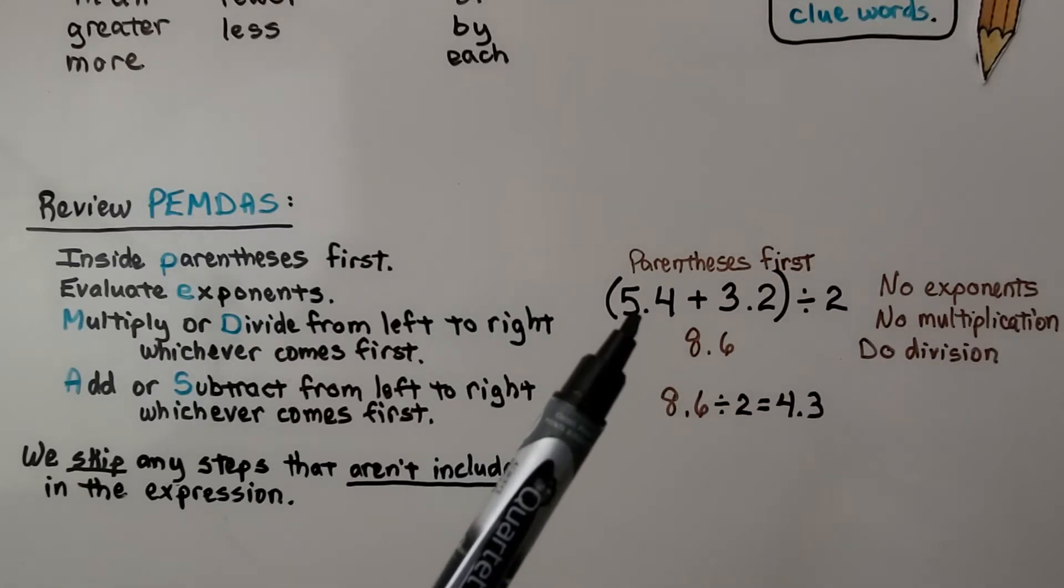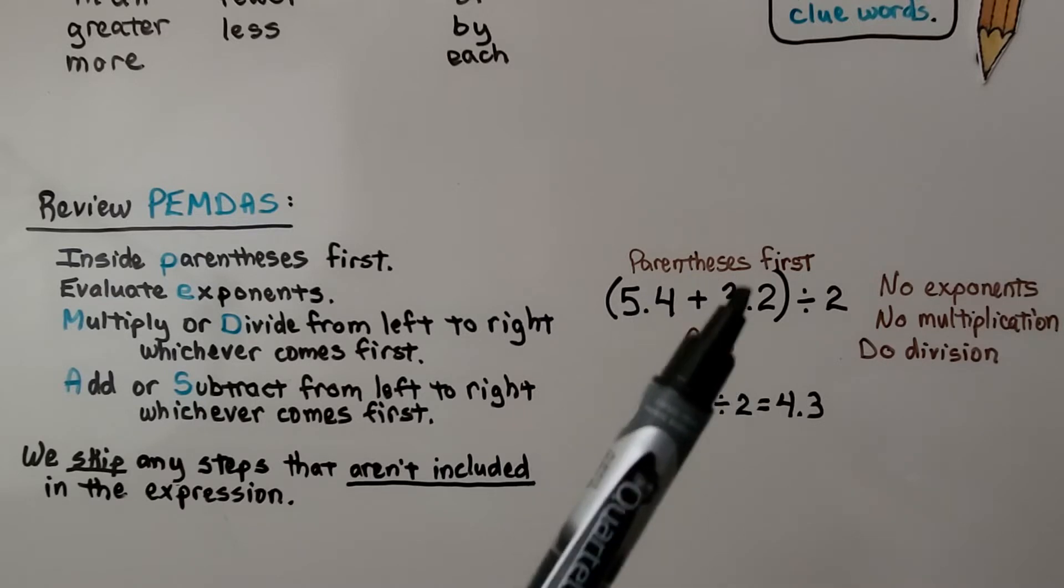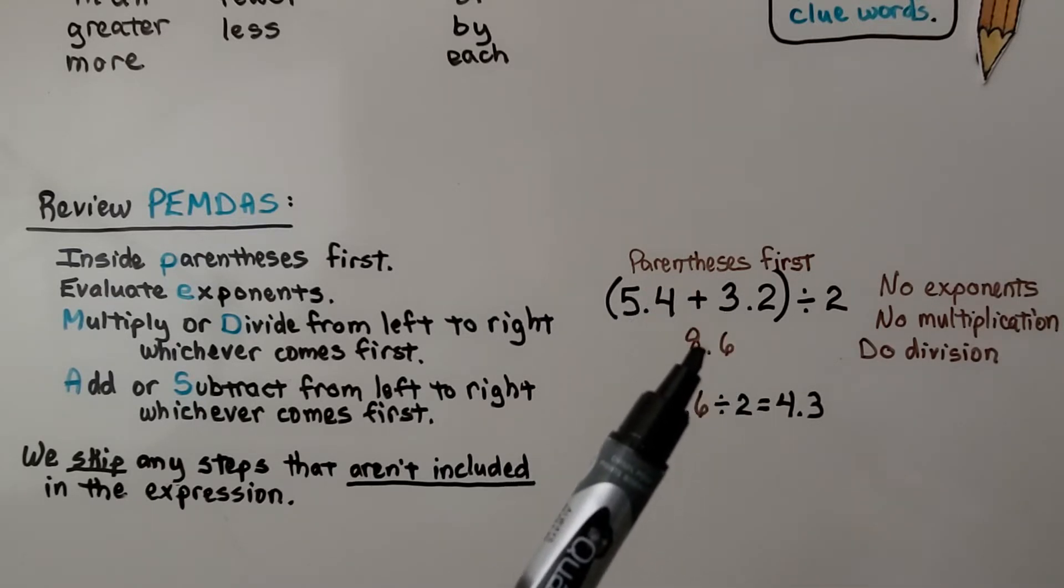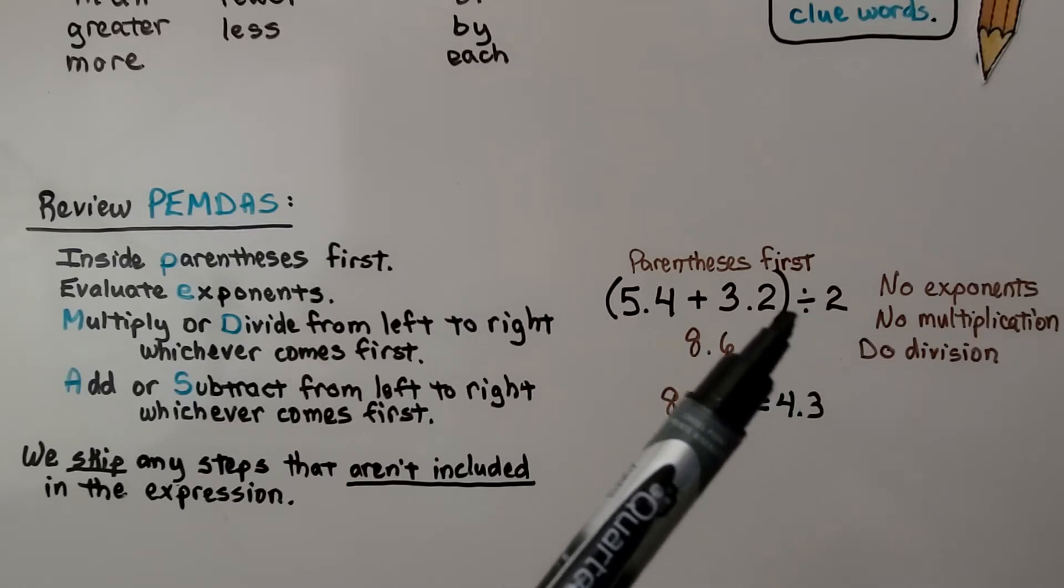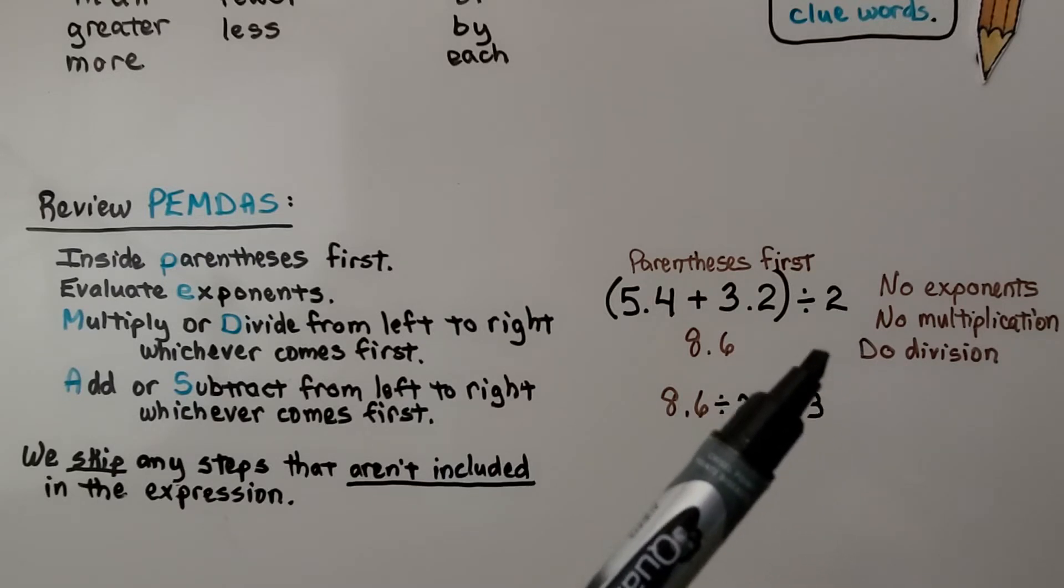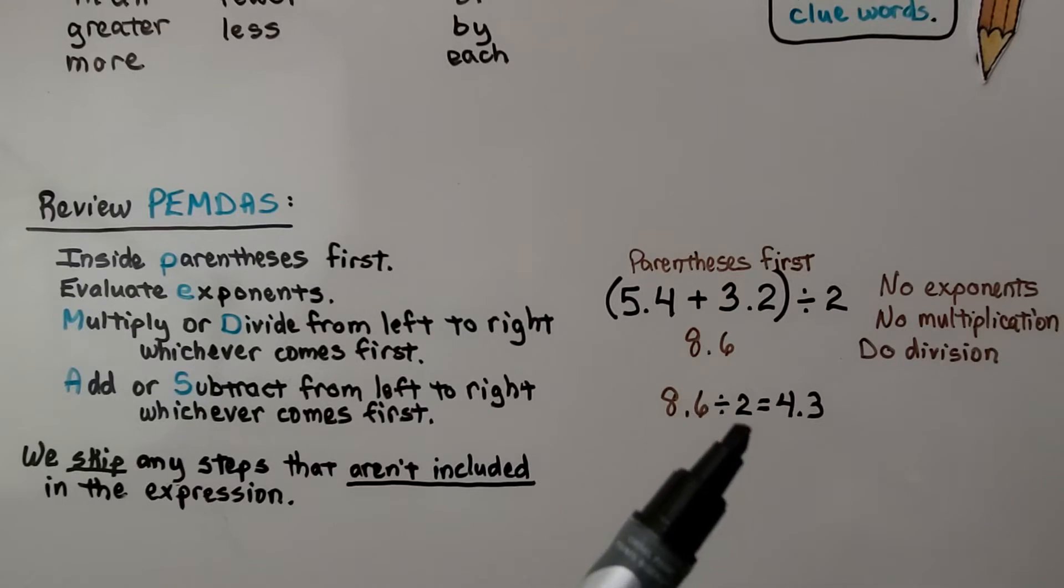So here we have an expression. We have 5 and 4 tenths plus 3 and 2 tenths. We would do inside the parentheses first. We would add them and get 8 and 6 tenths. Now, there's no exponents, so we don't do any. We skip it. There's no multiplication, so we don't do any. We skip it. We see there's division. So now we have 8 and 6 tenths divided by 2. It's equal to 4 and 3 tenths. We're splitting 8 and 6 tenths into two equal groups of 4 and 3 tenths each.